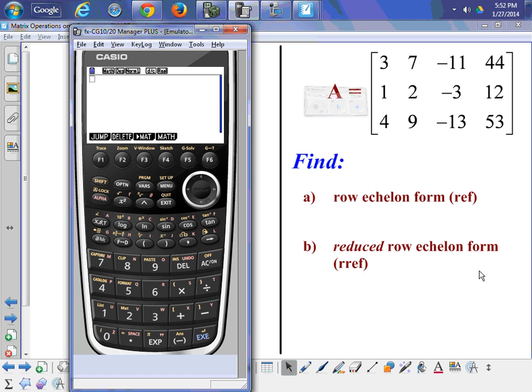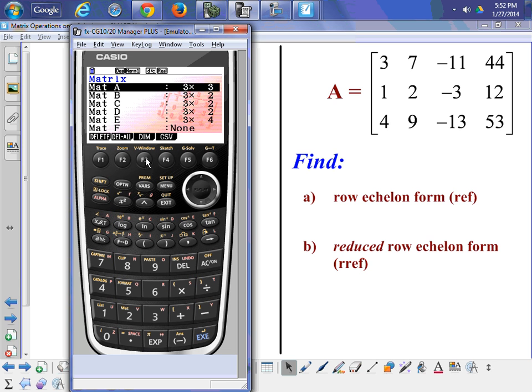This video will show you how to create a row echelon form of a matrix or a reduced row echelon form of a matrix. First of all, I've already stored it in matrix E, so it's important to know where you've put your different matrices.